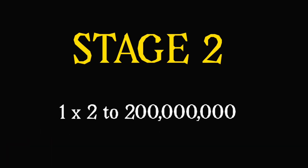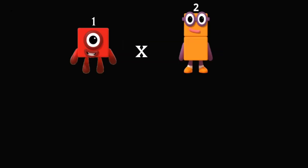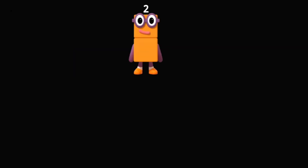Stage 2. 1 times 2 to 200,000,000. 1 times 2 equals 2.